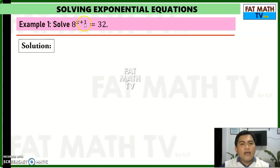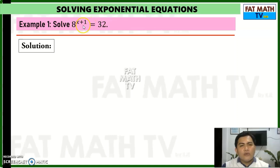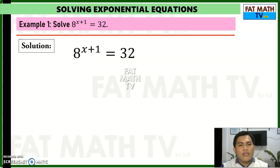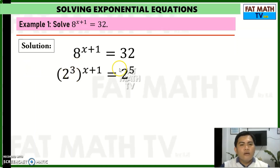For example, solve 8 raised to x plus 1 equals 32. We have to write the left and the right side with the same base. We need to know: 8 is a power of what? At the same time, 32 — both 8 and 32 are powers of 2.